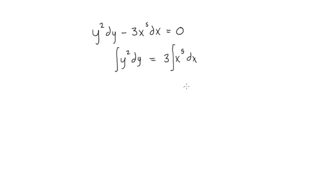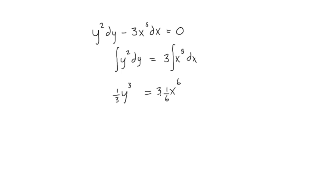Integrating the left side we get y to the power of 3 over 3, or times one third. We won't write the constant here — we'll bring it to the other side. On the right we get x to the power of 6 over 6, all times 3. We can lump both integration constants into one arbitrary constant.